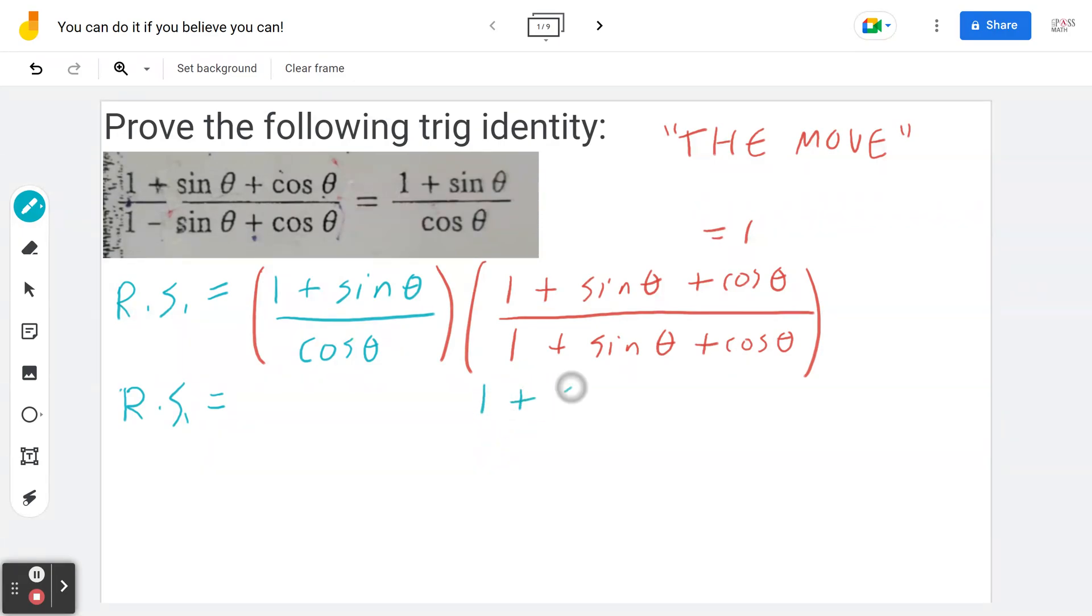So notice what I'm doing here. I would like 1 plus sin theta plus cos theta. So I'm going to copy this. I'm not going to do anything else because that's what I want and I have what I want. So again, this is what I want and I have it now. So I don't expand this. I just copied it for the rest of the upcoming steps.